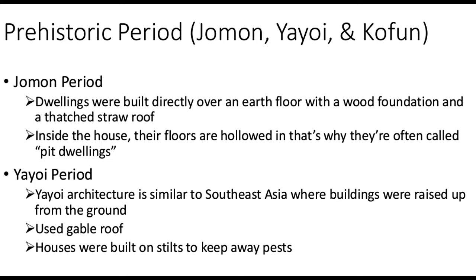In the prehistoric Jomon period of Japanese architecture, dwellings were built directly over the earth floor with a wood foundation and a thatched straw roof; their floors are hollowed, so they are often called pit dwellings. In the Yayoi period, architecture is similar to Southeast Asian buildings, raised from the ground, using gable roofs, with houses built on stilts to keep away pests.